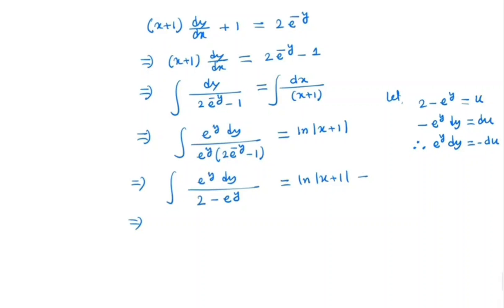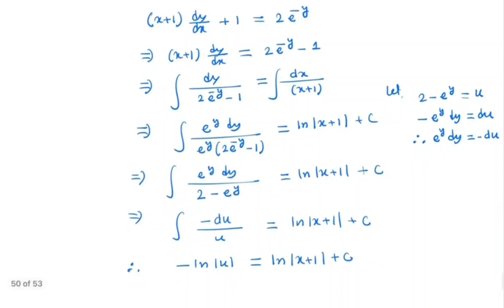So we have the integral of -du/u. This gives us -ln|u| = ln|x+1| + C.